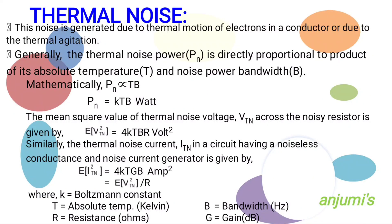The mean square value of thermal noise voltage Vtn across a noisy resistor is given by: E[Vtn²] = 4KTBR volt squared. Similarly, the thermal noise current in a circuit having a noiseless conductance and a noisy current generator is given by: E[In²] = 4KTGB ampere squared, which equals E[Vtn²] divided by R, where G is conductance equal to 1/R.